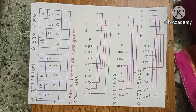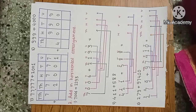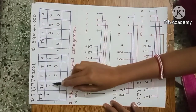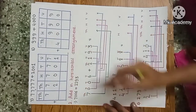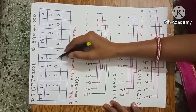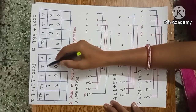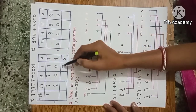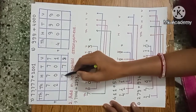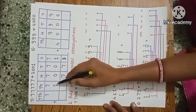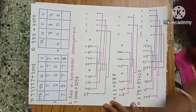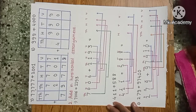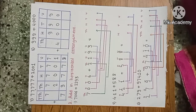Seventh example: 77,777 plus 2,001. Start from unit place: 7 plus 1 is 8; tens: 7 plus 0 is 7; hundreds: 7 plus 0 is 7; thousands: 7 plus 2 is 9; ten-thousands: 7. The answer is 79,778.